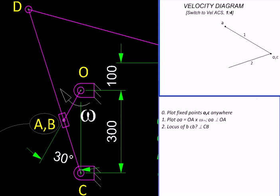So first, we plot the direction of B's velocity relative to C, which is perpendicular to BC. And then we plot the direction of velocity of B relative to A, from A, which is parallel to this guide. Wherever these two loci meet, we locate the velocity image of B.